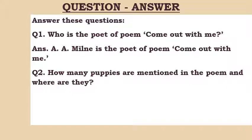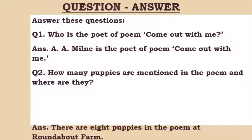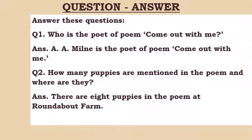I have put two parts into a single question so that you have to answer it in a complete way. There are eight puppies in the poem, and they are at Roundabout Farm. There is a line at the start of the poem about puppies playing at Roundabout Farm, and I have based this question on that line.